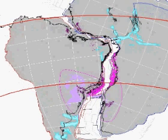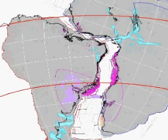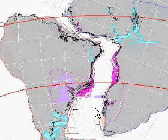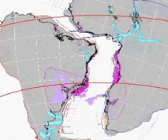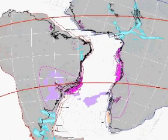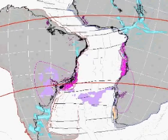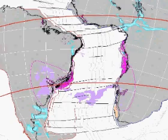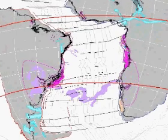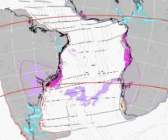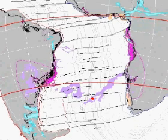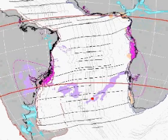The Walvis Ridge-Rio Grande Rise V-shaped pattern of purple volcanics is shown developing as both Africa and South America drift northward in reference to the fixed hotspot location of Tristan da Cunha, which appears as the red dark spot in the last 50 million years of the movie.